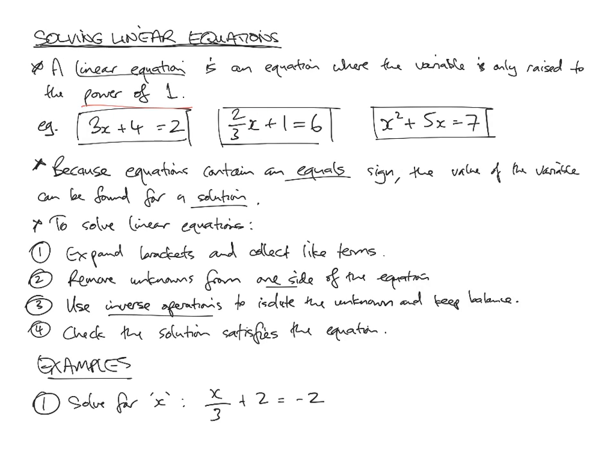Here, the variable is x. There's no power written there, so it's to the power of 1 — that is a linear equation. x squared plus 5x is equal to 7. This is to the power of 2, so this is not linear. Even though there is an x to the power of 1 there, having an x to the power of 2 somewhere in the equation immediately makes it non-linear.